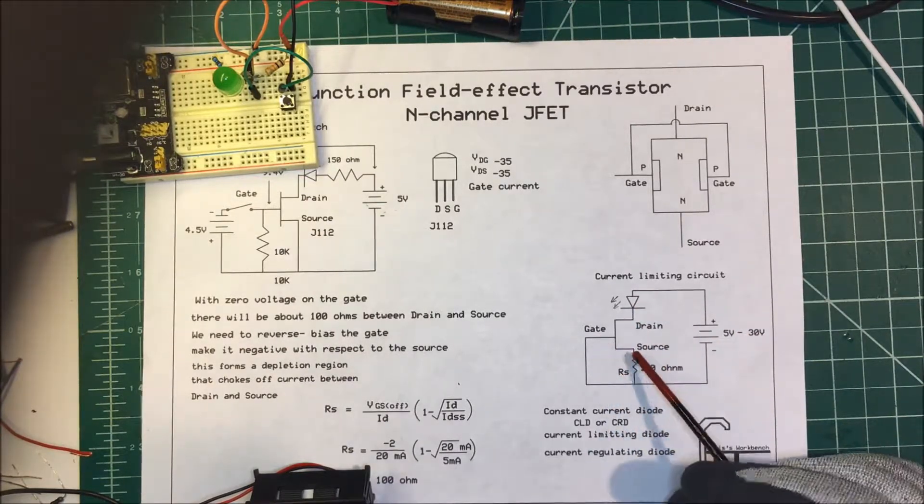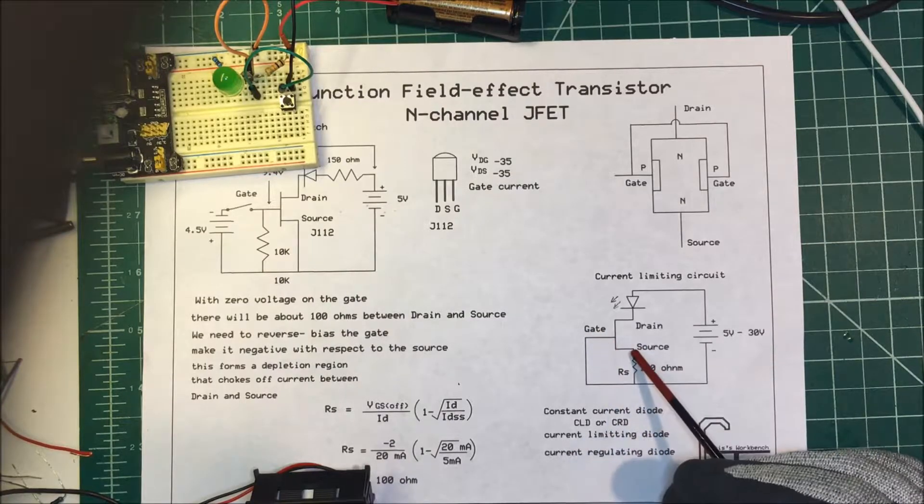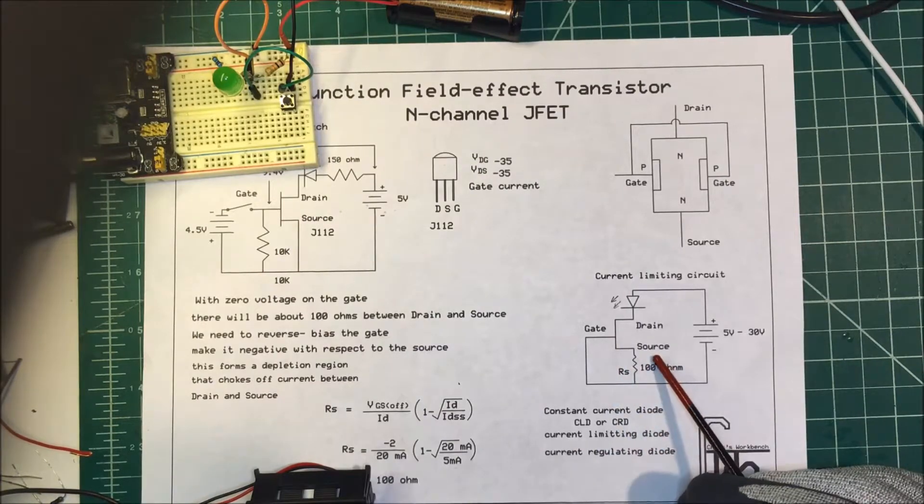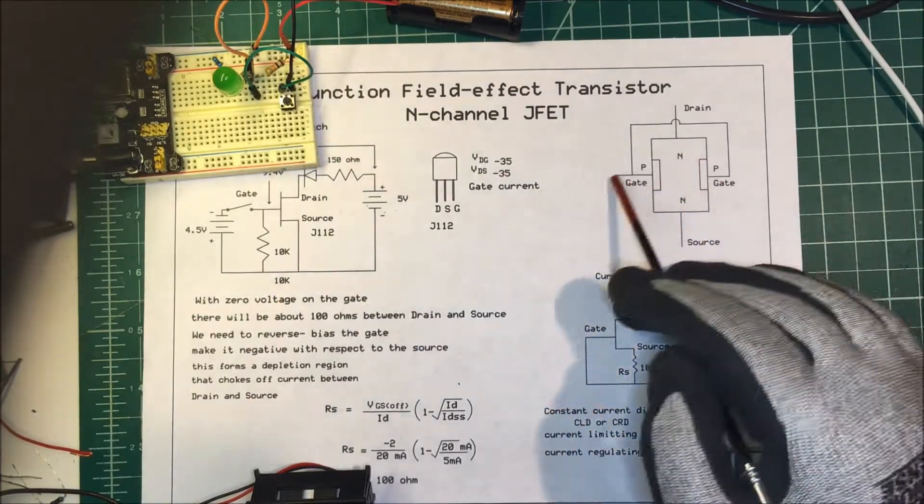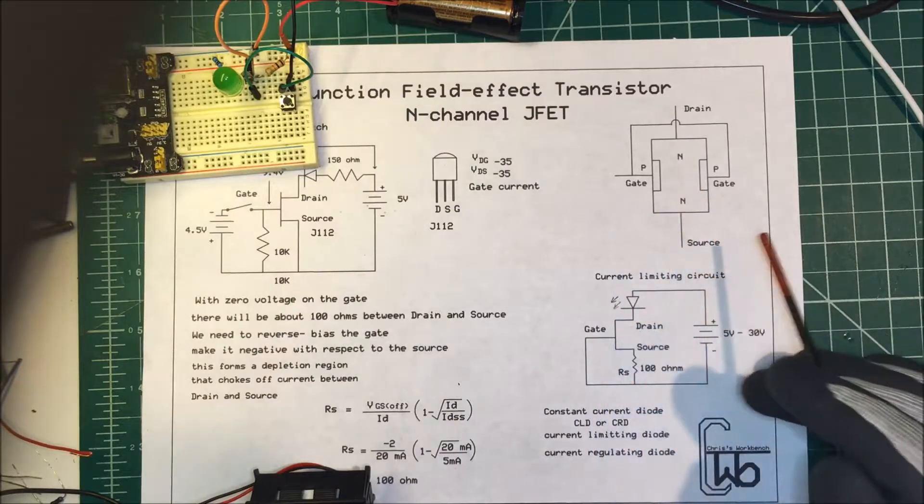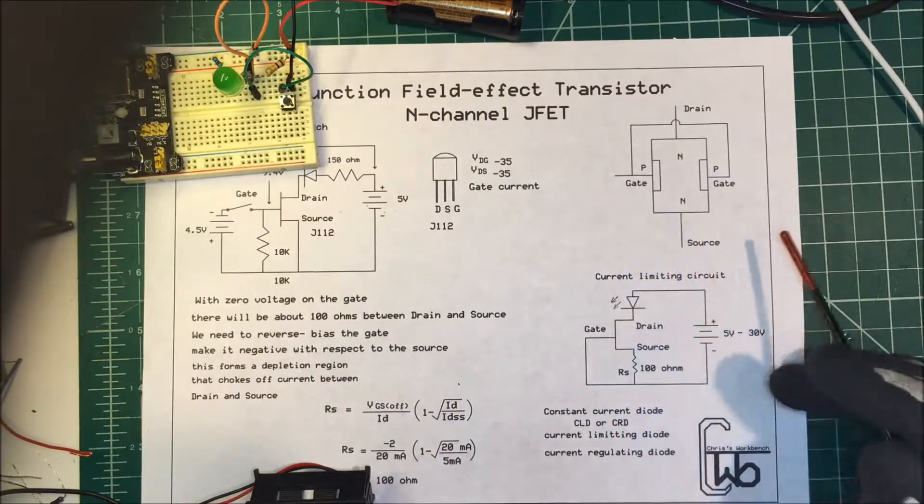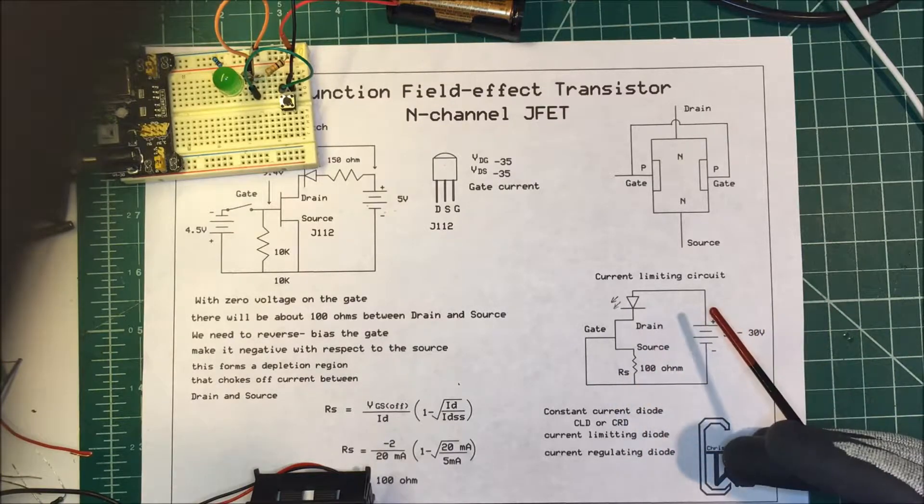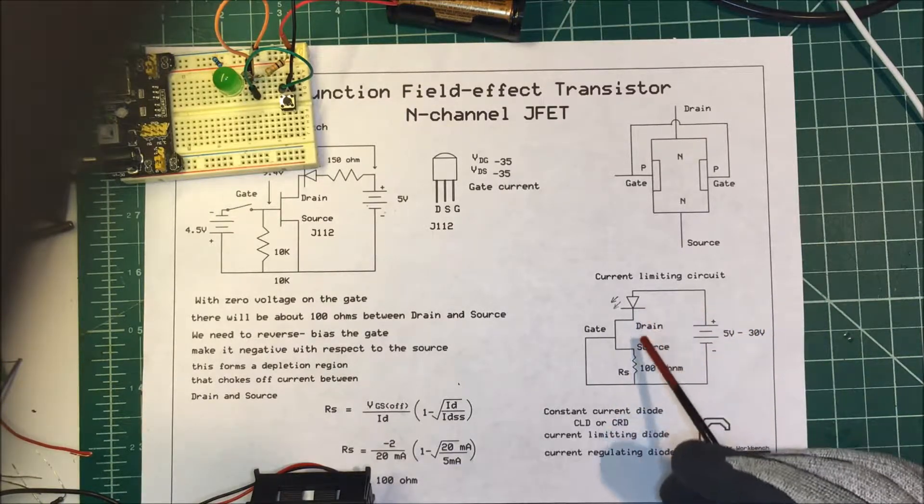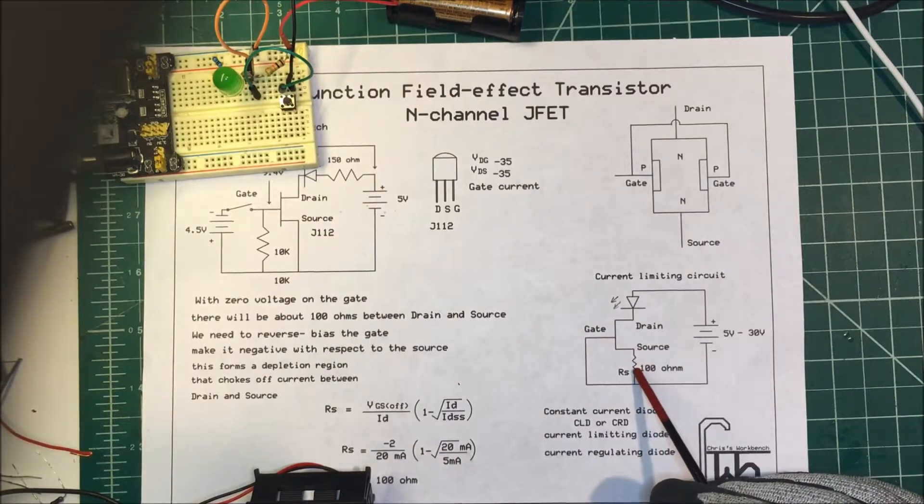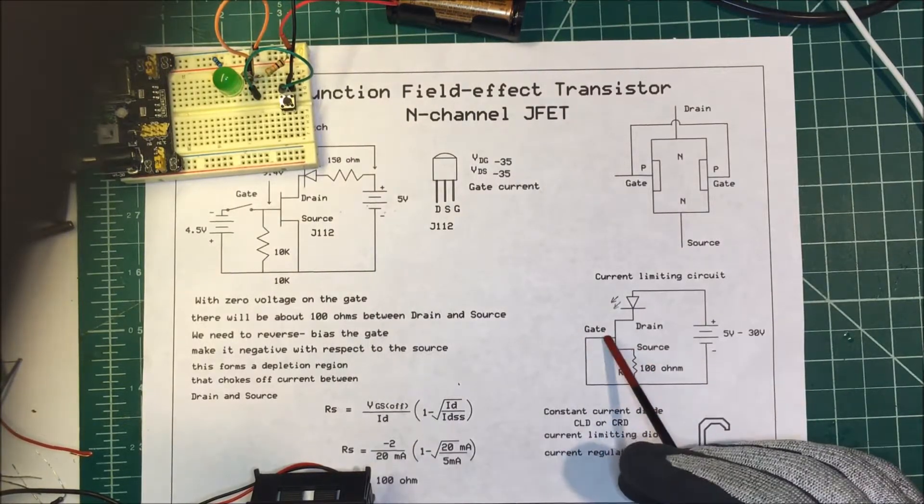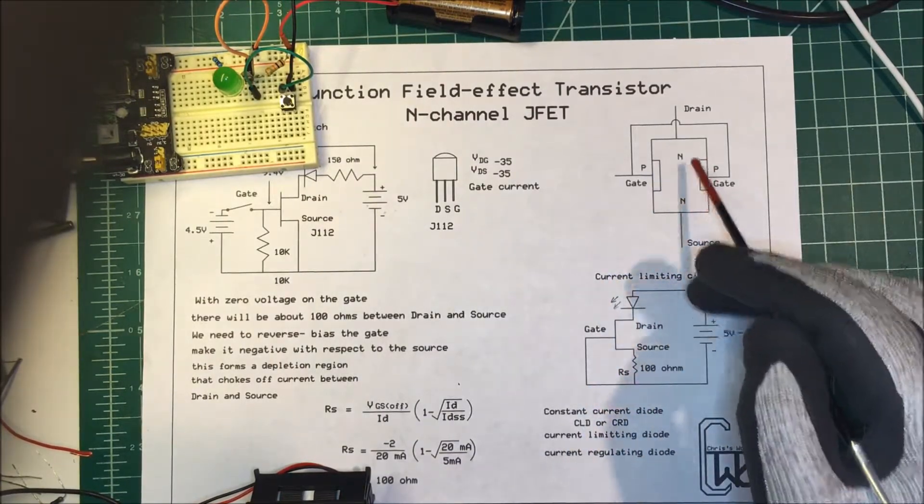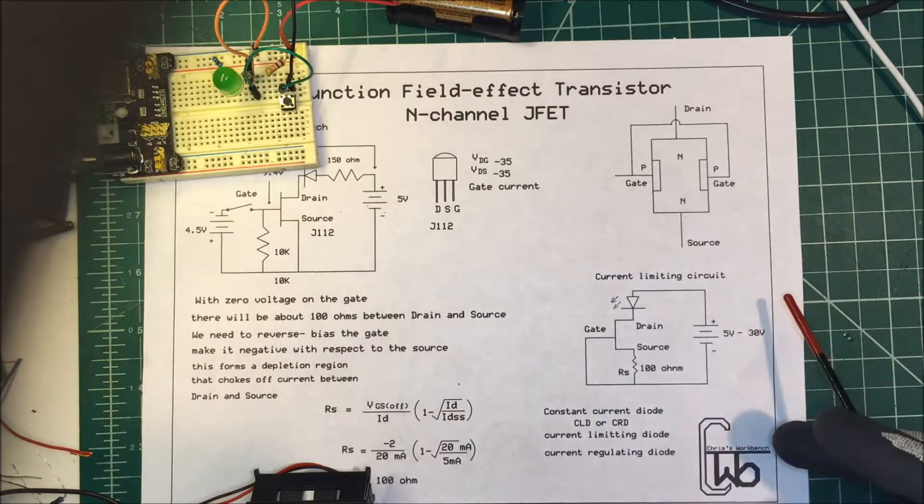If you take the gate and you tie the gate to the source directly, you're going to have zero voltage on the gate. Gate source voltage will be zero and this will just allow about 50 milliamps to flow from the drain to the source. We don't want 50 milliamps. We want about 20 milliamps. I'm going to put a resistor in here and it's going to drop some voltage onto the gate. Some negative voltage and it's going to form a depletion region and regulate the current flow through here.